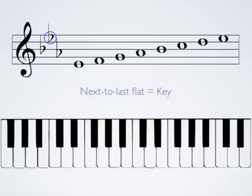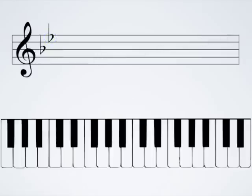Let's do another example, this time with two flats. If we have two flats, the next-to-last flat is B flat, and this means we're in the key of B flat major.